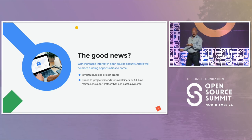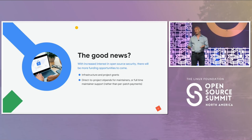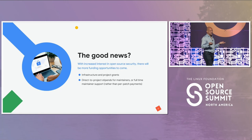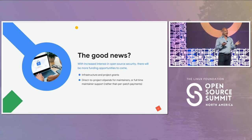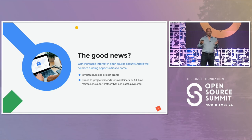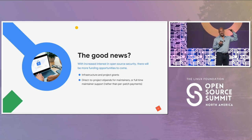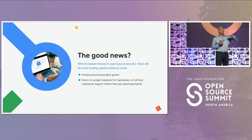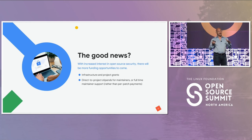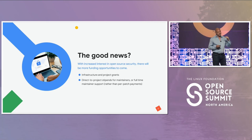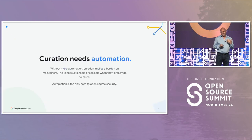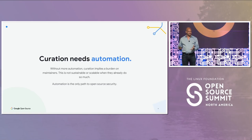The good news is because all these governments and companies have realized they have to solve this problem, I am seeing an increase in funding in various ways. I've met with the U.S. government, U.K., Germany, and several others. They all say: we depend on open-source, it's a problem, how can we help? They don't know how to help yet, but you can see the interest. They're willing to pay for curation, and they would even pay maintainers if they knew how to do that. But we still need automation because it's really hard to get all this stuff to just work the right way.